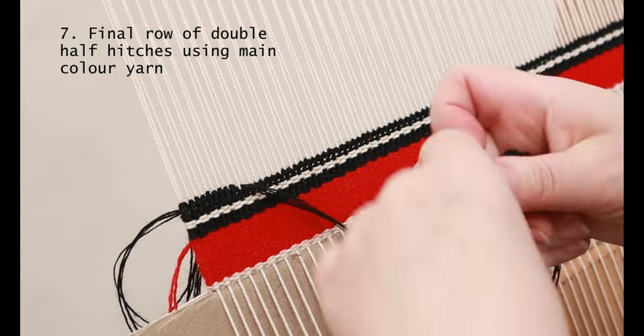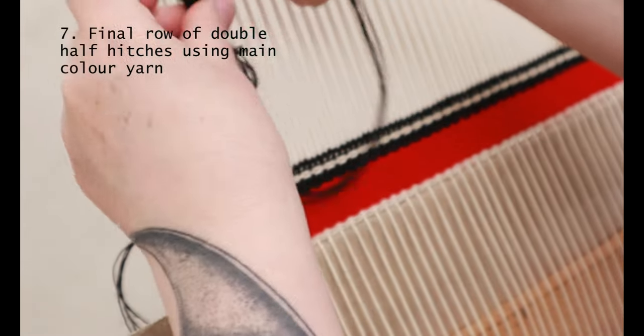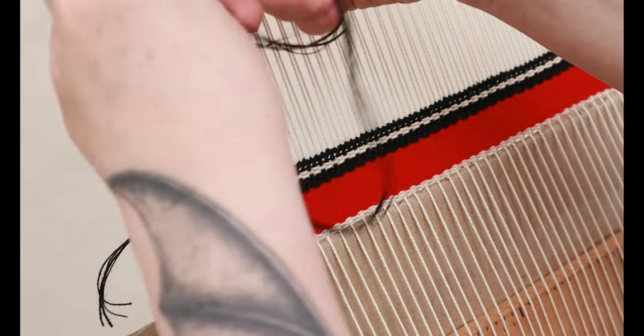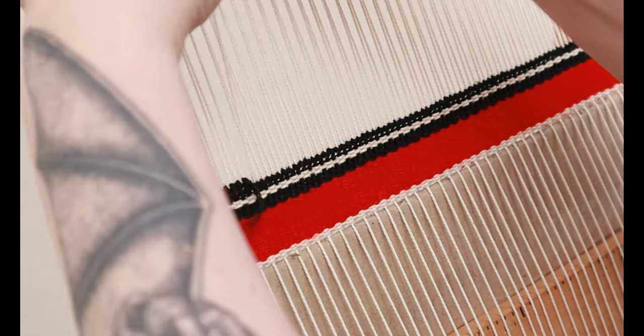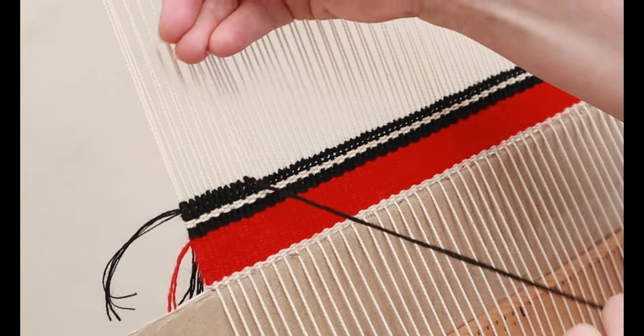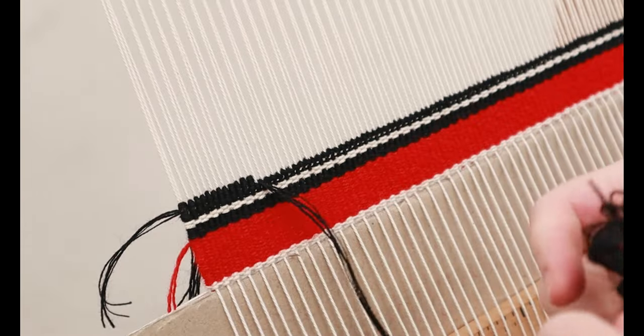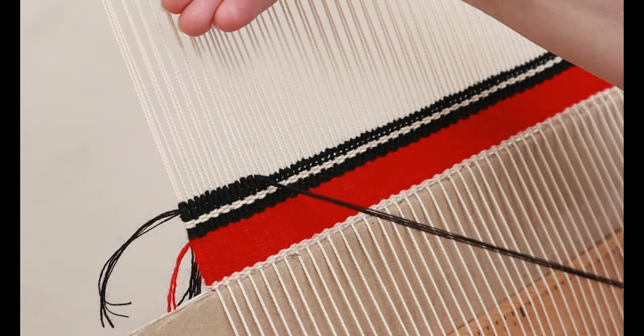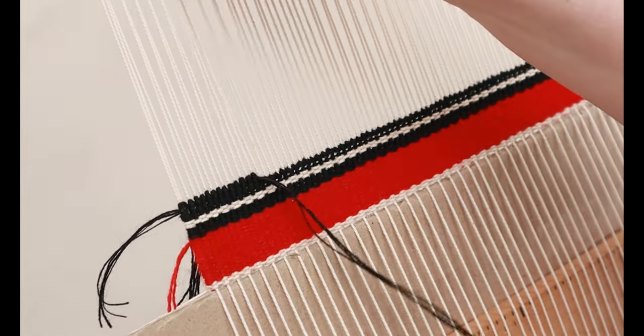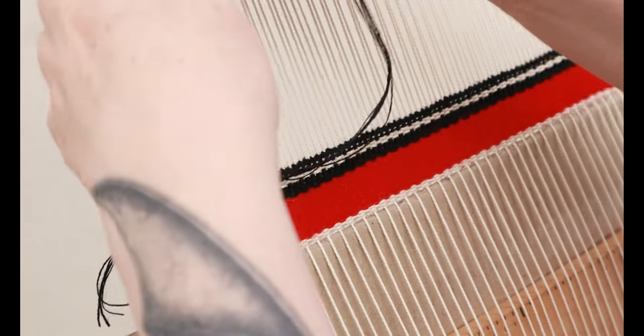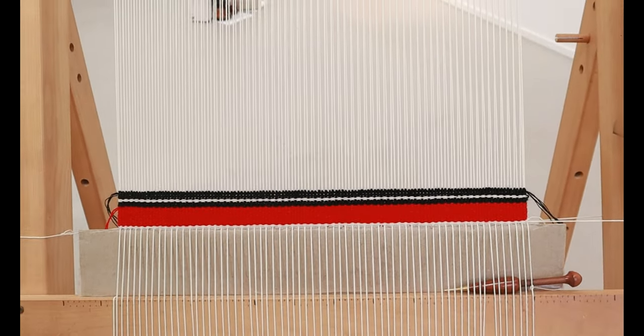We're on the home stretch now, the final row of double half hitches. This time we're using the same yarn that you're going to be using for the background or the bottom of the tapestry you're working on. This is the third and final row of double half hitches. This is what the hem looks like. Finally, we are ready to start weaving.